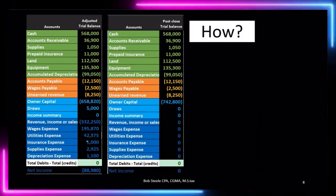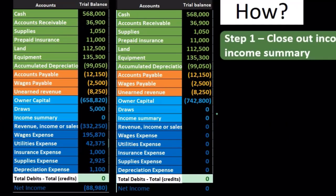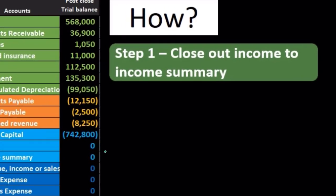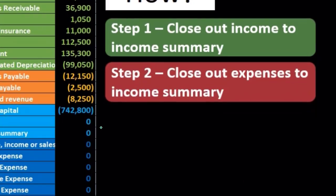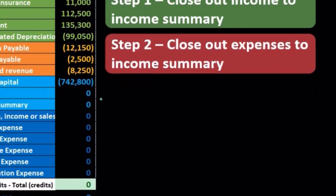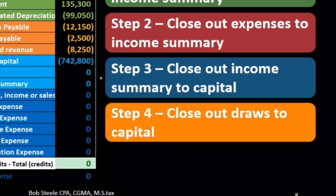We have now converted the adjusted trial balance to the post-closing trial balance, closing out all the temporary accounts. To recap: step one, close out income to the income summary; step two, close out expenses to the income summary; step three, close out the income summary — now having net income in it — to the capital account; and step four, finally, closing out draws to the capital account.